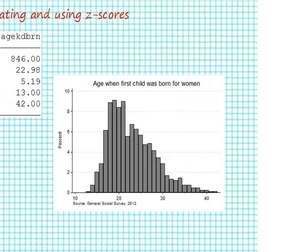In this video I'm going to show you some examples of how to calculate and use z-scores. The variable I've chosen to use for my example is from the General Social Survey in 2012, its mnemonic is agekdbrn, which measures the age when your first child was born.